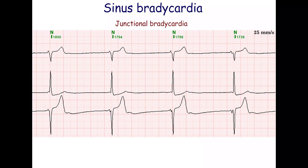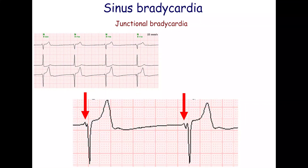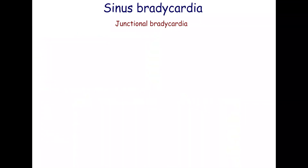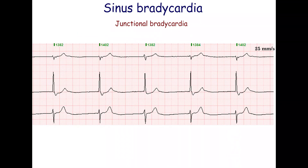The atria are activated slightly before the ventricles. The heart rate on this ECG is 33 beats per minute. Each QRS complex is preceded by a P-wave; however, the PR interval is very short and variable.